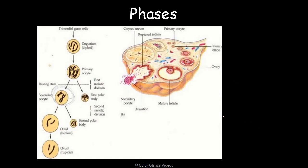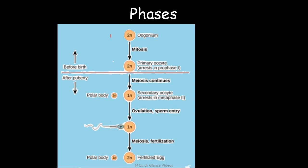So the process diagrammatically flows as: primordial germ cells → oogonium → primary oocytes → first meiotic division produces the first polar body (haploid) and a secondary oocyte → second meiotic division produces the ootid and secondary polar bodies → finally the ovum, which is haploid. The multiplication phase happens before birth, and after puberty the second phase and ovulation occur as meiosis continues.